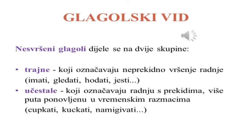Nesvršeni glagoli dijele se na dvije skupine: trajne, koji označavaju neprekidno vršenje radnje – na primjer: imati, gledati, hodati, jesti – i učestale, koji označavaju radnju s prekidima, više puta ponovljenu u vremenskim razmacima – na primjer: cupkati, kuckati, namigivati, itd.